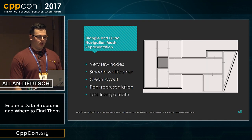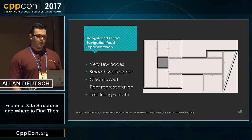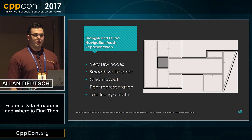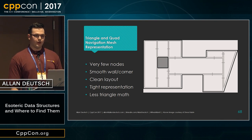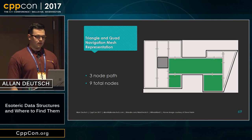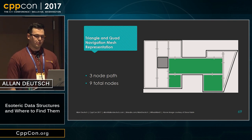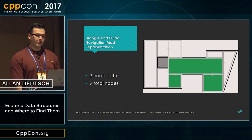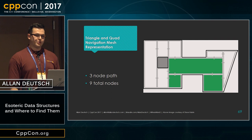Finally, we can look at a triangle and quad-based nav mesh representation. In this one there are very few nodes, the walls and corners are all smoothly handled, it's got a pretty clean layout, it tightly represents the search space, and as an added bonus, all of that expensive triangle math is mostly avoided with just one triangle in this representation. Our search example here — we only have to cross three nodes to get from start to finish, and the nine total nodes means this was one order of magnitude better for the search from the original grid representation, and two orders of magnitude better for the total search space representation.